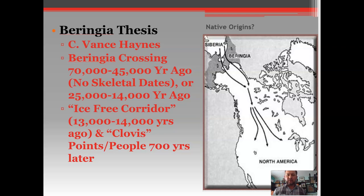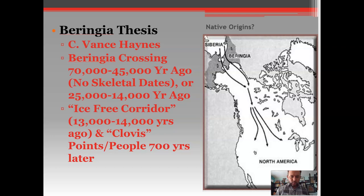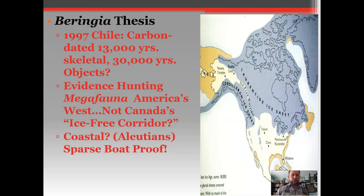The problem is that when scientists look for a 'carbon footprint' — evidence of human habitation like fossilized feces or hunting remains — very little was found along that ice sheet corridor. Does that disprove Haynes's thesis? Of course not. But does it fail to support it convincingly? I think so.